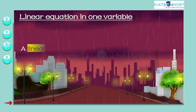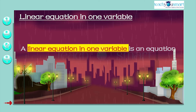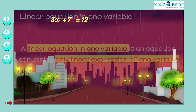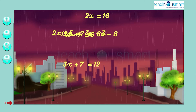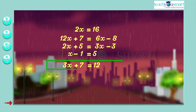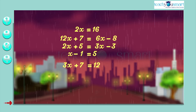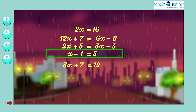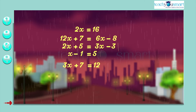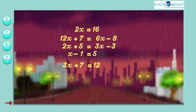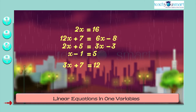We know that a linear equation in one variable is an equation containing only the linear expression of one variable. For example: 3x + 7 = 12, 2x + 5 = 3x - 3, x - 1 = 5, 2x = 16, and 12x + 7 = 6x - 8 are some linear equations in one variable.